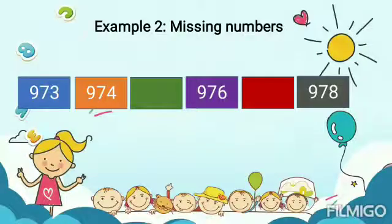Now, let us take another example. Here also, we find few 3 digit numbers written and we also see that 2 numbers are missing. So, let us find out the missing numbers. First, we will count 973, 974, then what will come? 975, then 976 and the missing number here is 977 and then 978.